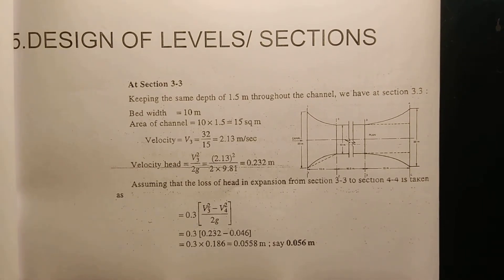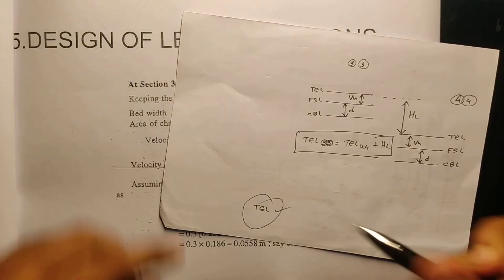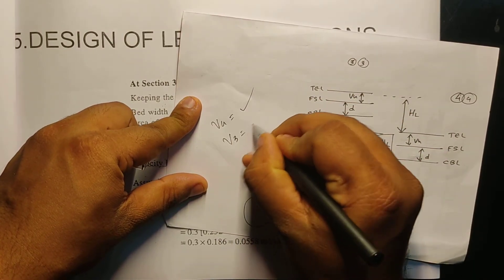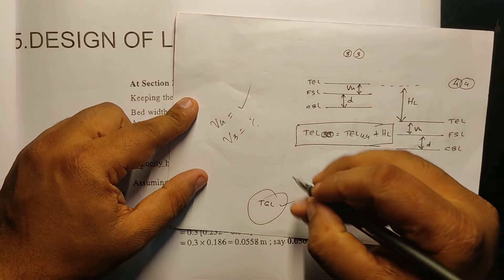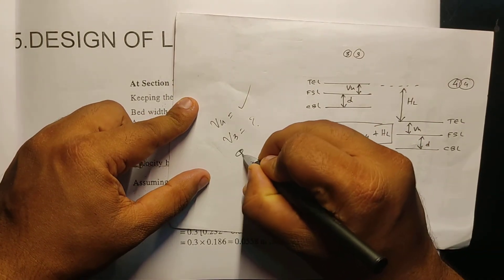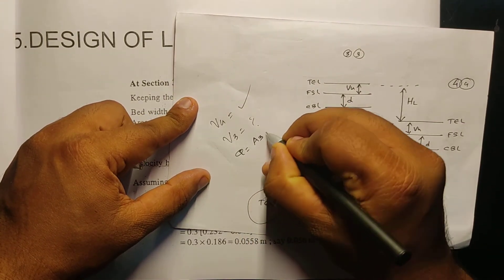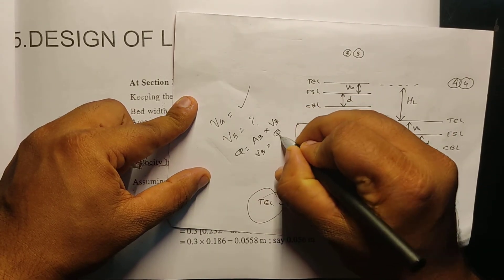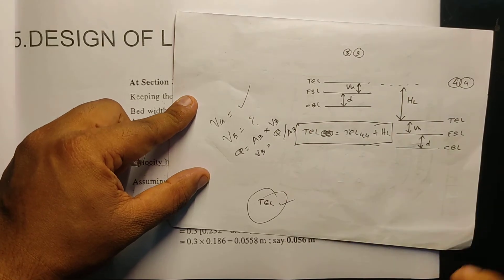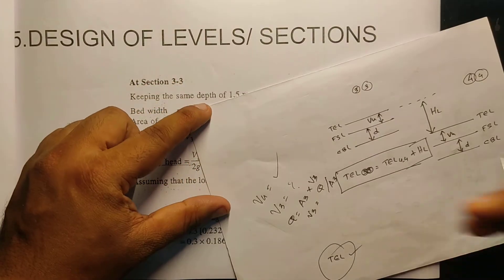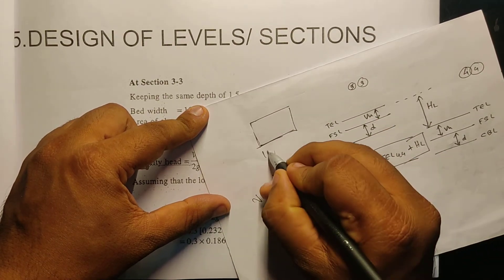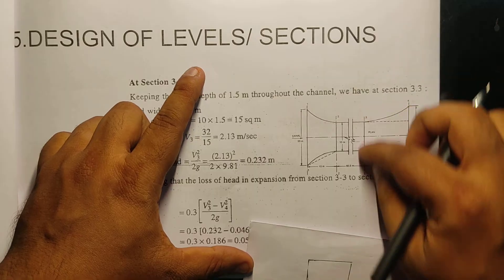Assuming that the head loss in expansion at section 3-3 is taken as 0.3 times (V3² minus V4²) divided by 2g. Q is equal to A3 times V3, and also A4 times V4. So we use A3 = Q divided by A3. A3 is a rectangular shape, and it is 10 meters wide.